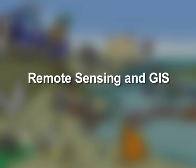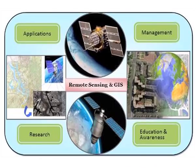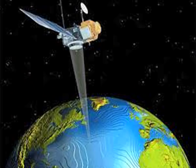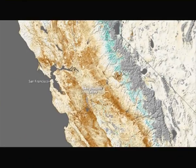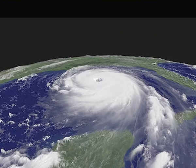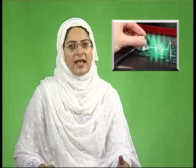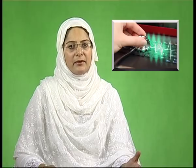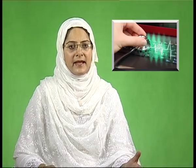Remote sensing and GIS is an effective tool in environment management. Environmental changes can be assessed through satellites by remote sensing. The occurrence of natural calamities like droughts and floods can be predicted well in advance. Such assessments help environmentalists and planners to take ameliorative measures to minimise the effects of these extreme natural events.